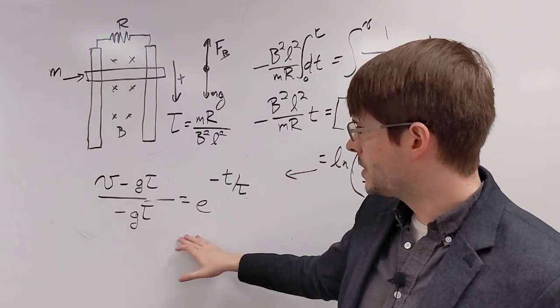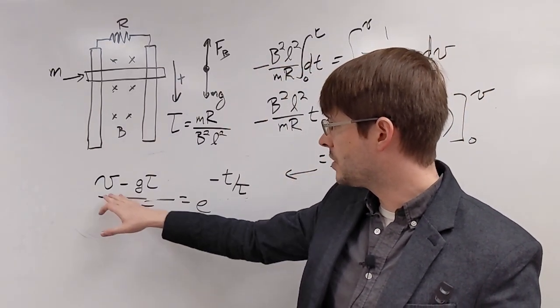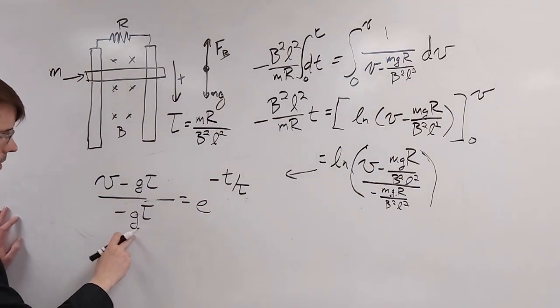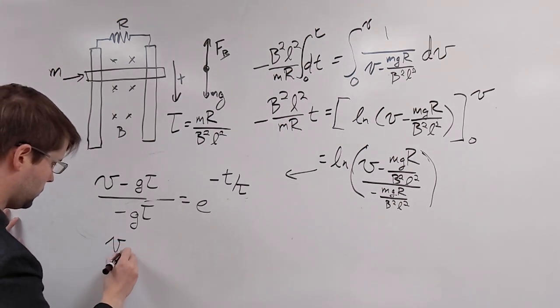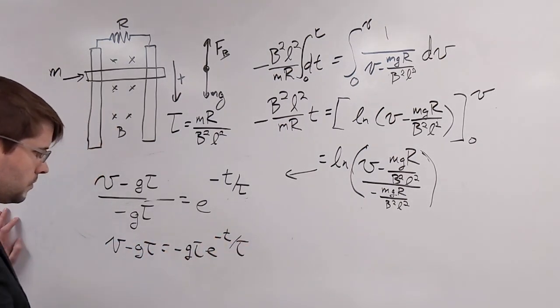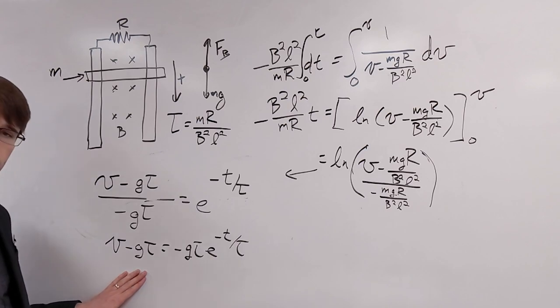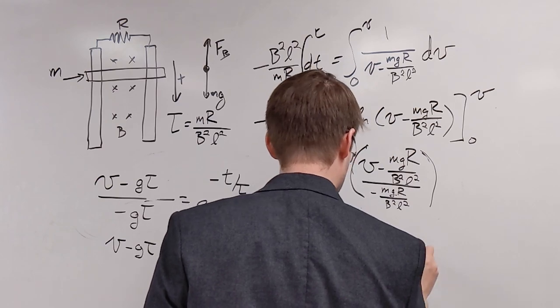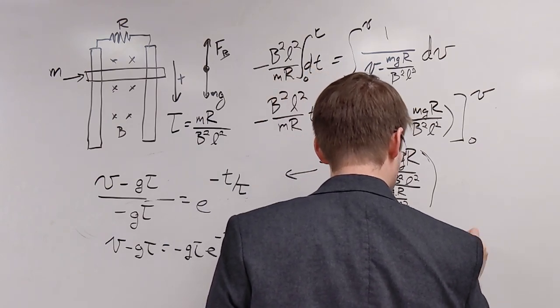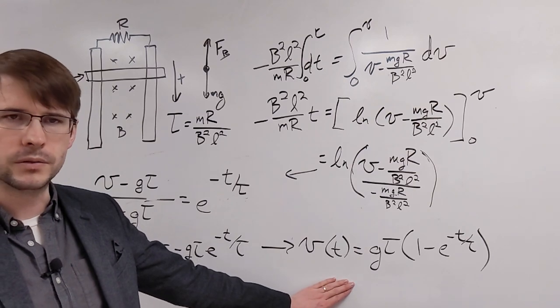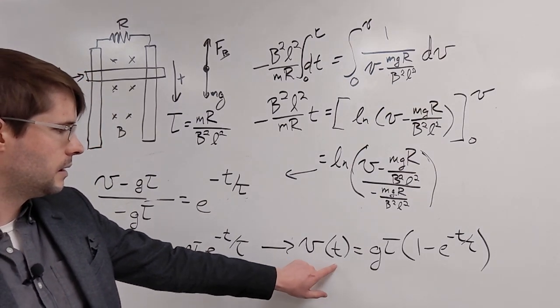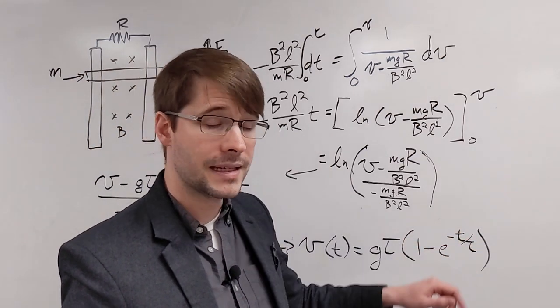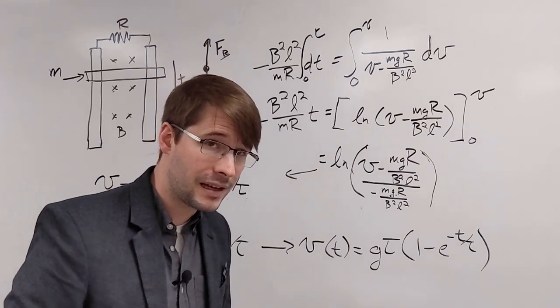All right, so our equation gets a little bit simpler here. Now what I'm going to do is solve for v. Multiply both sides by minus g tau. And then add g tau to both sides of the equation. And get this equation right here. That the velocity as a function of time is equal to g times tau to the quantity 1 minus e to the negative t over tau. And so tau here is actually a time constant.